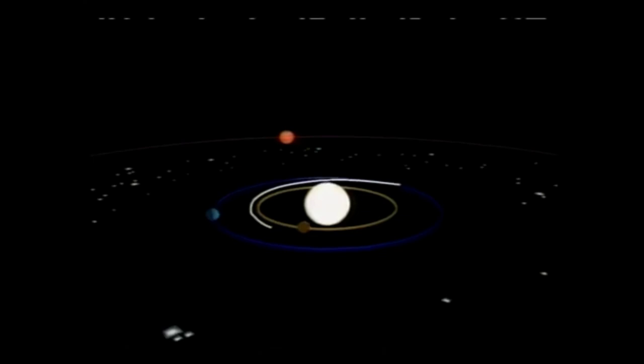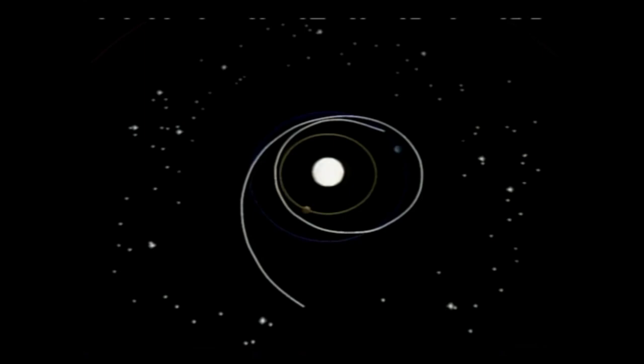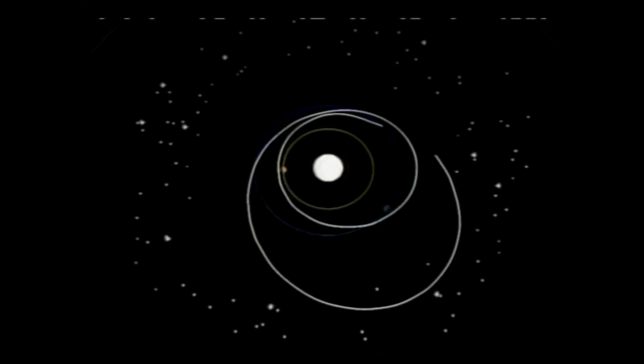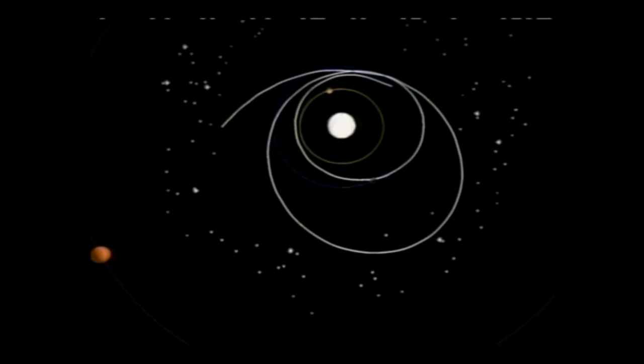En route to Jupiter, Galileo will pick up energy by utilizing gravity assists while traveling once by Venus and twice by Earth. In addition to the bonus of studying these two planets and Earth's moon, Galileo will perform close flybys on one or two asteroids never before closely observed. Then Galileo will rendezvous with Jupiter and its moons in 1995.